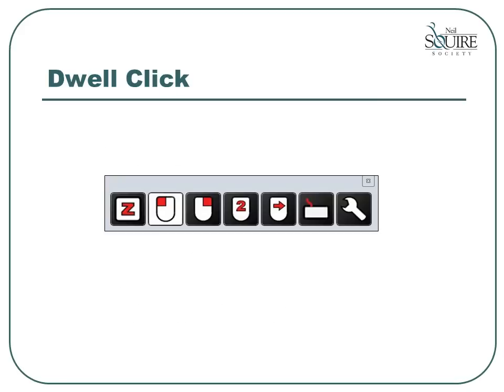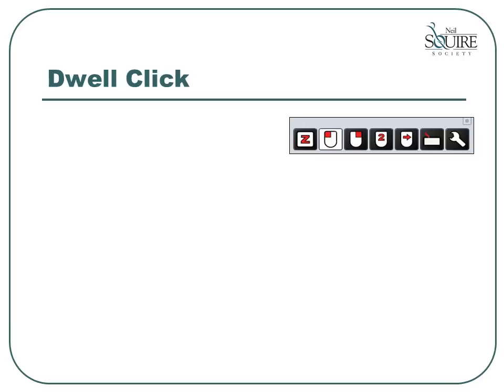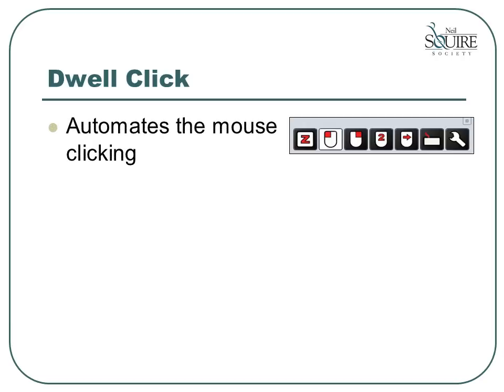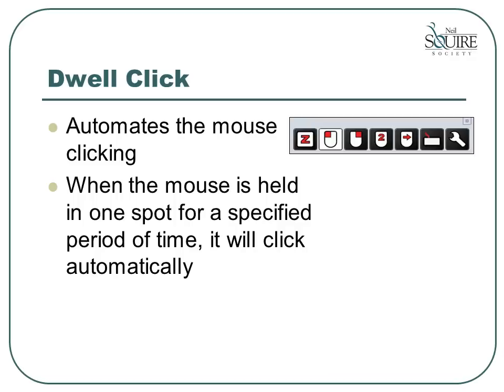Dwell clicking is another software option for improving mouse control. This software is available either for purchase or as freeware. If you're having difficulty holding the mouse still while you click the button, this might be a good option for you. Also, if you experience pain from clicking the mouse button many times, this software will give you some relief from that action. Personally, I use this software whenever I'm working on the computer and doing a lot of mouse clicking. It allows me to move the mouse to various locations and just pause for a moment to wait for the click.